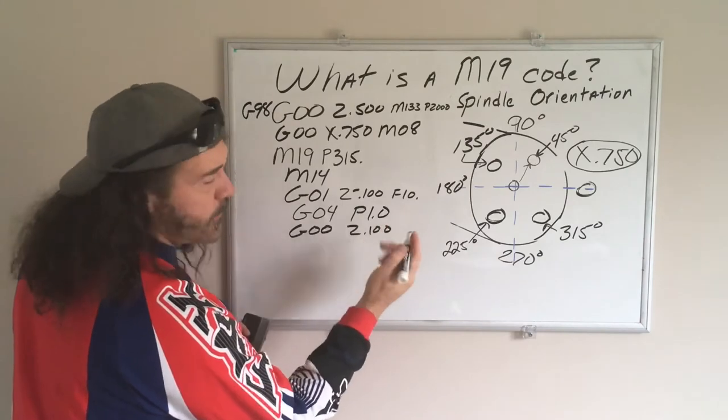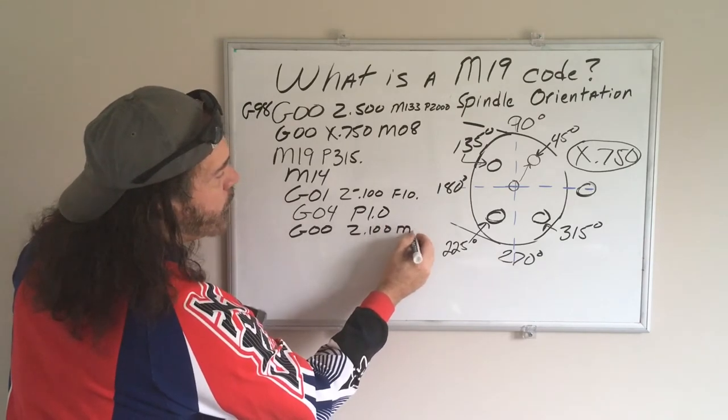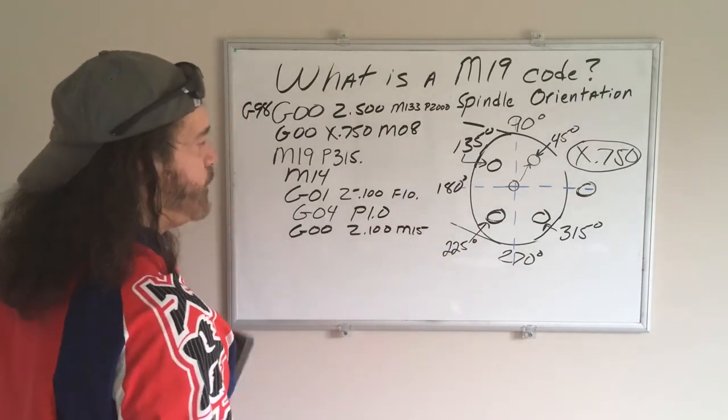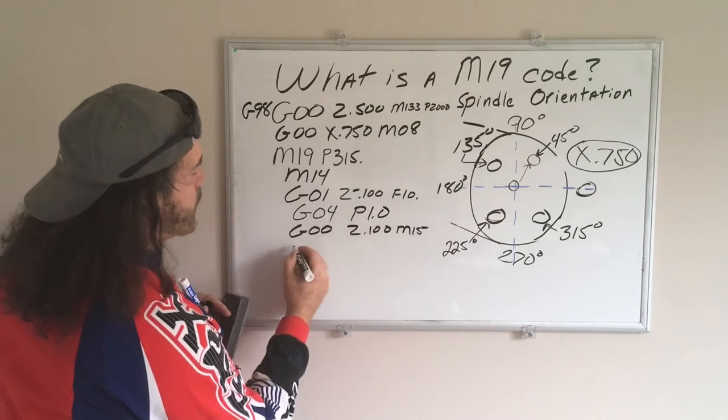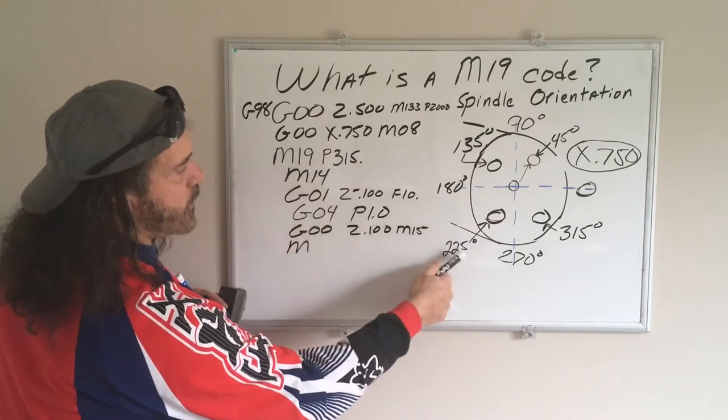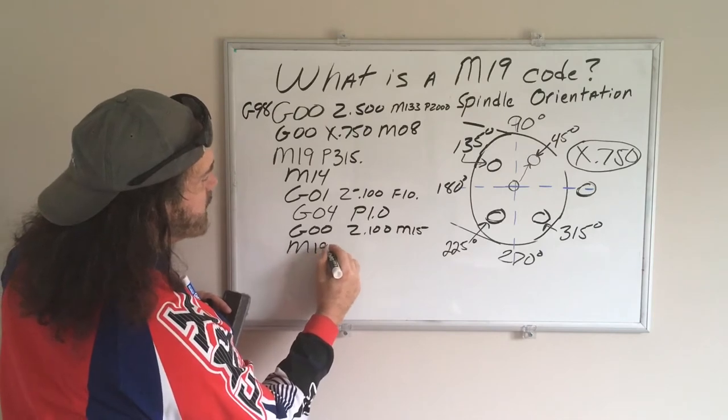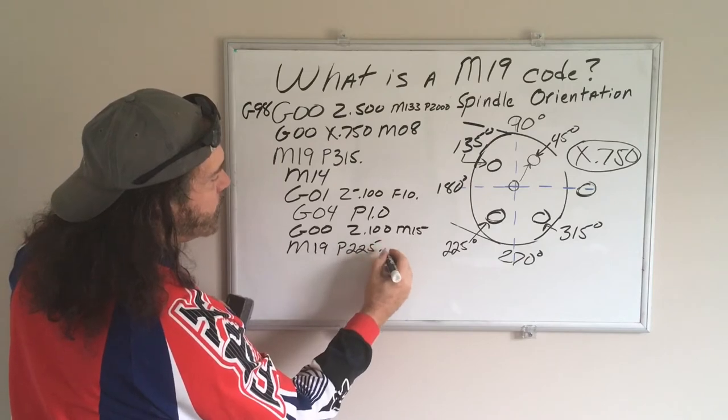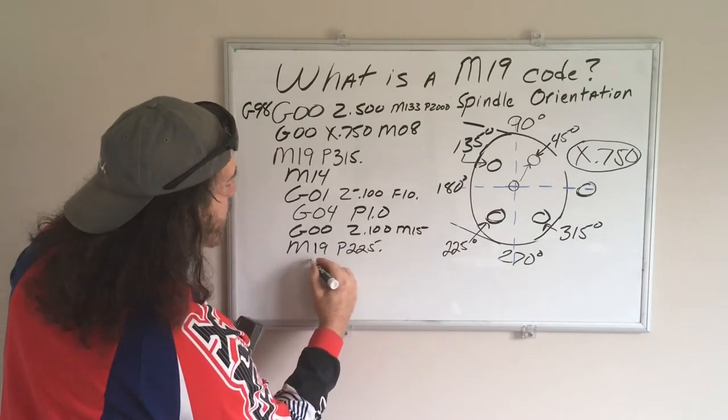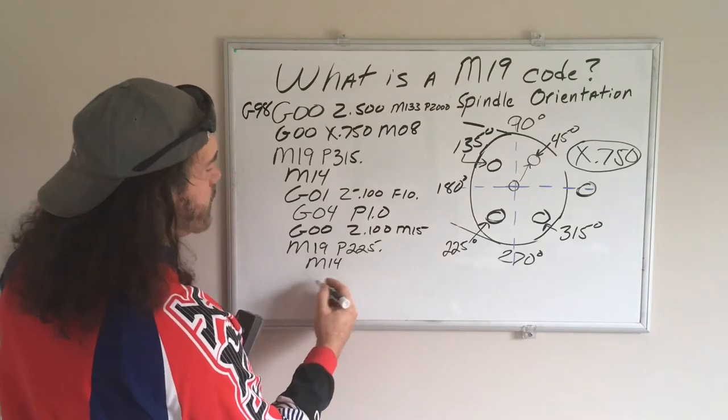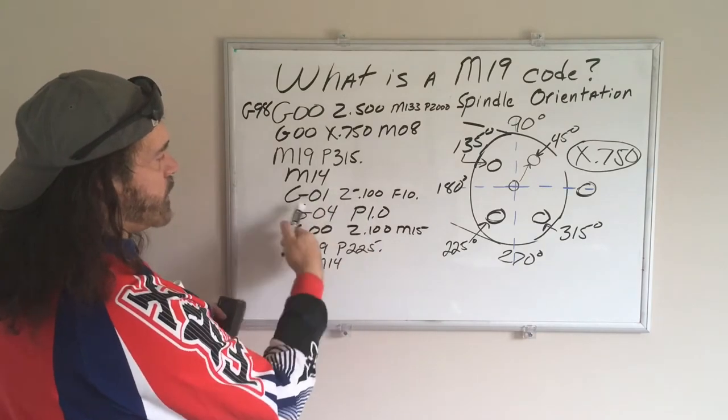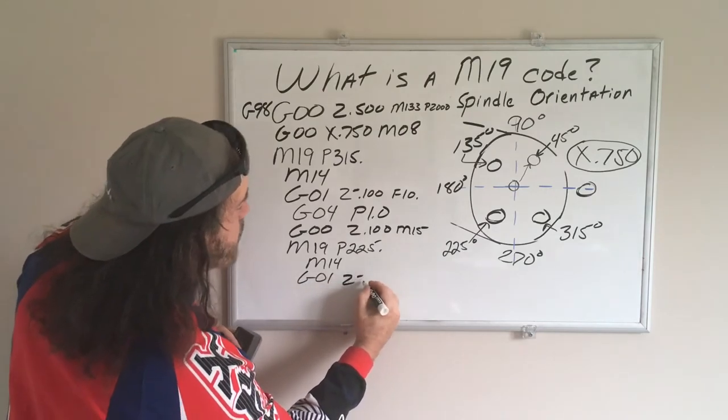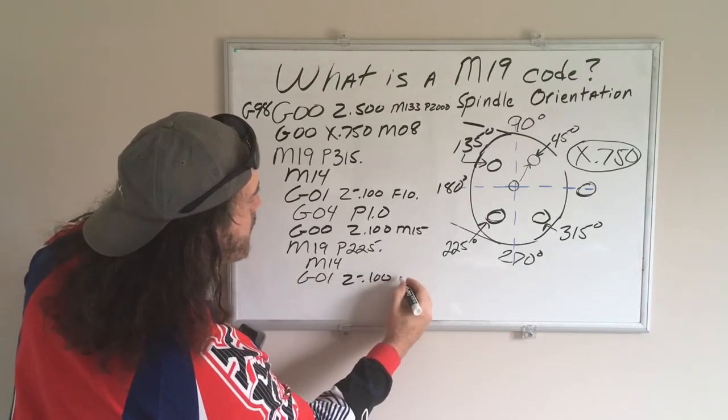Then I'll put an M15, which unlocks the spindle. Now I'm going to do my next M code, which we figured would be 225. M19 P225, and then M14, and then you're going to repeat this part.